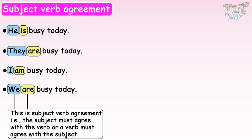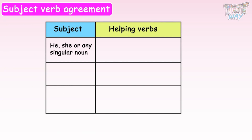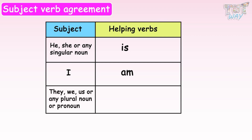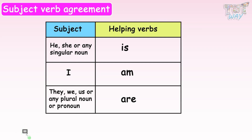The subject must agree with the verb, and we have rules for this. If the subject is singular, like he, she, or any singular noun, we use 'is' with these subjects. If the subject is 'I', we use 'am' with it. For plural subjects like they, we, us, or any plural noun or pronoun, we use 'are'. That is, the subject and the verb must agree with each other. This is about the helping verbs.